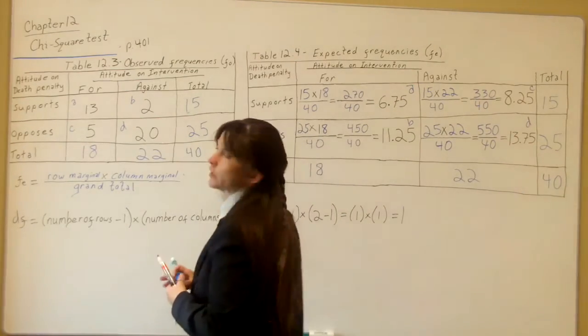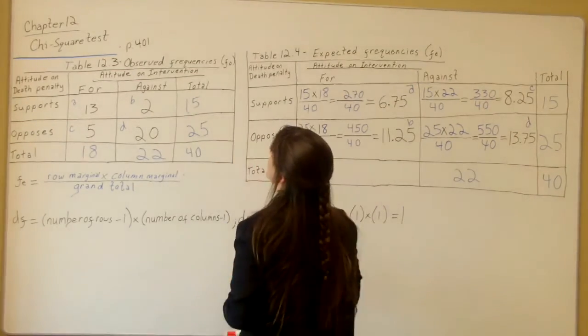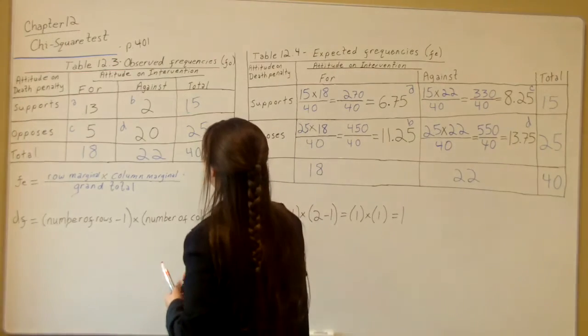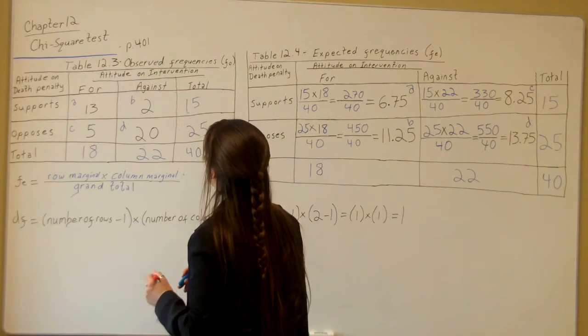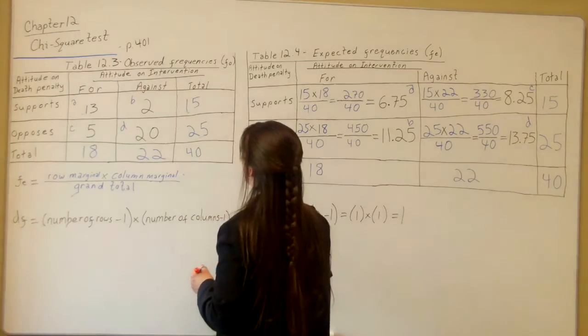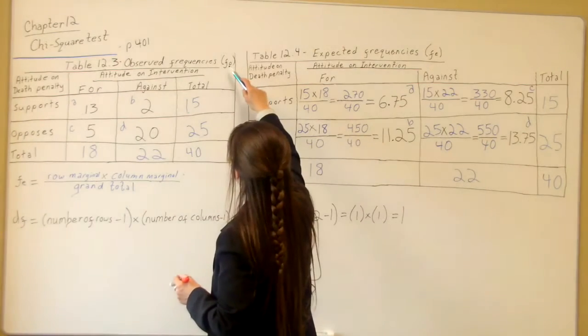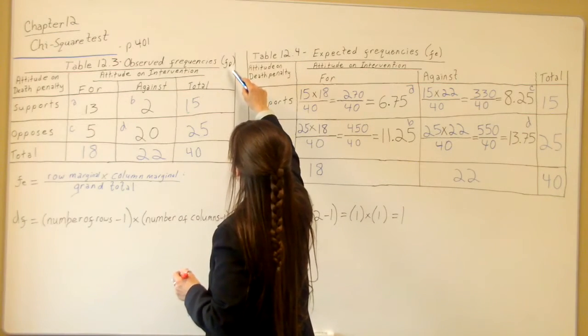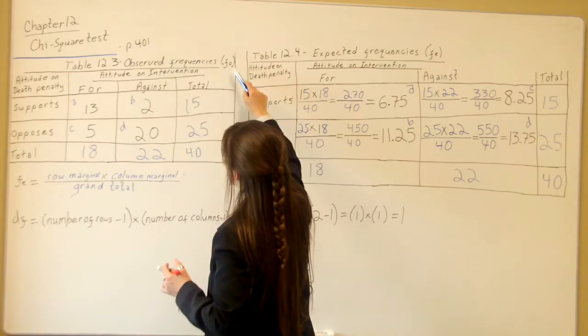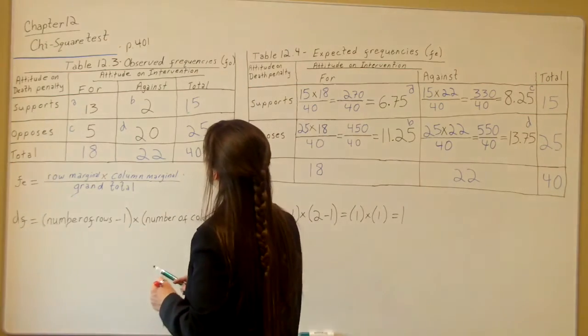Turn to your Cirkin textbook, page 401, and we're going to look at Table 12.3, your observed frequencies, which are labeled the italicized lowercase f subscript o for observed frequencies.